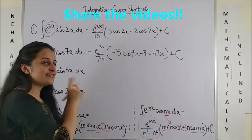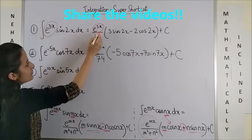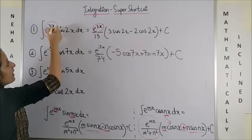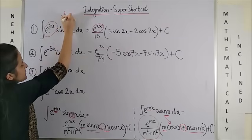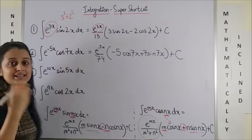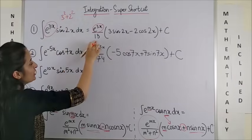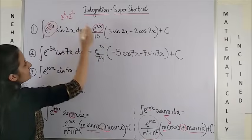So as you can see in the first question, e to the power 3x is copied as it is. Upon, this is m square plus n square. So this gives me 3 square plus 2 square. That's 9 plus 4, 13.